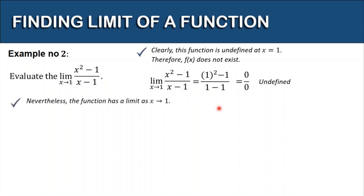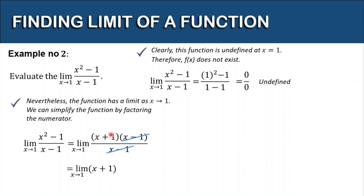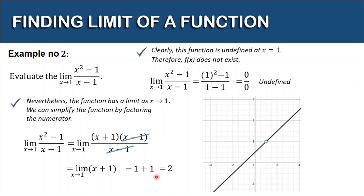Nevertheless, the function has a limit as x approaches 1. We can simplify by factoring the numerator: the limit of (x squared minus 1) over (x minus 1) as x approaches 1 factors into (x plus 1)(x minus 1) over (x minus 1). We can cancel (x minus 1) in the numerator and denominator, leaving x plus 1. Evaluating the limit gives us 1 plus 1, so the limit is 2. The function is undefined at x equals 1, but it still has a limit of 2 — on the graph this appears as a hole at that point.